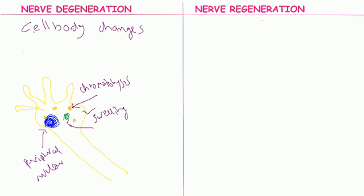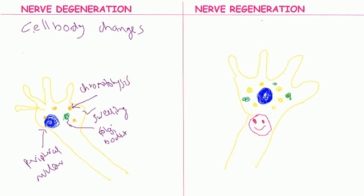The Golgi bodies are also degenerated. In regeneration, the cell returns to normal: the nucleus regains its central position, and the Nissl granules and Golgi bodies are reformed.